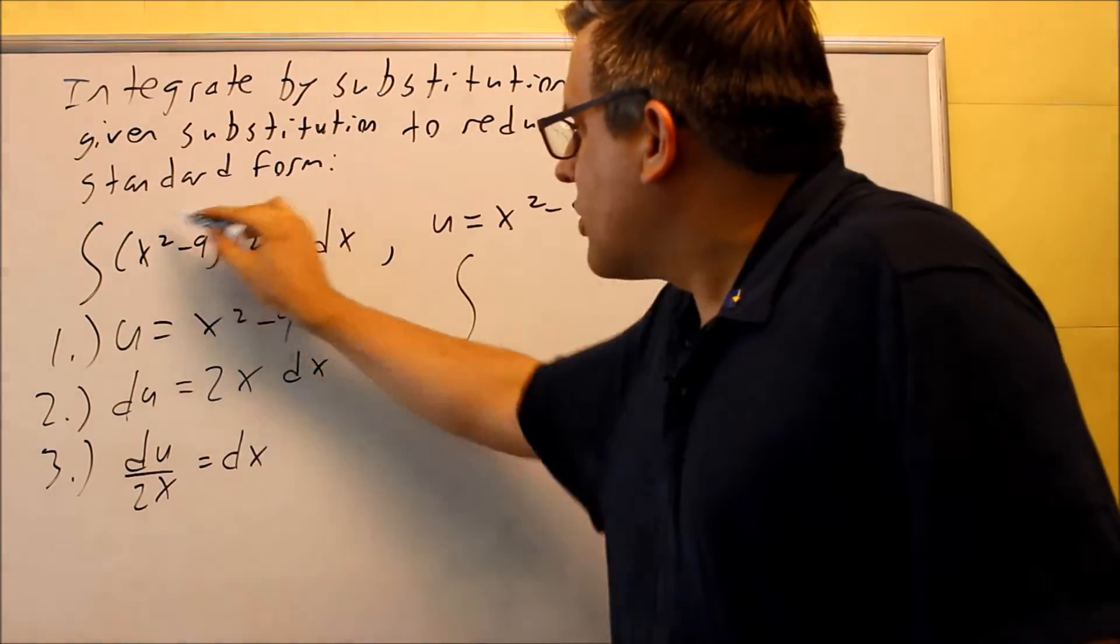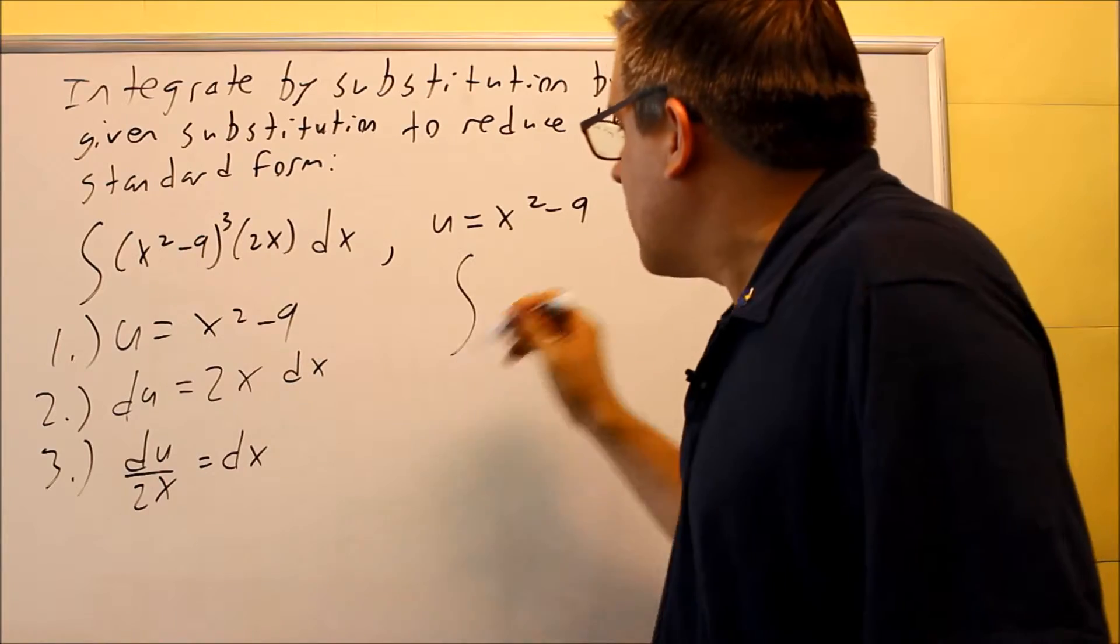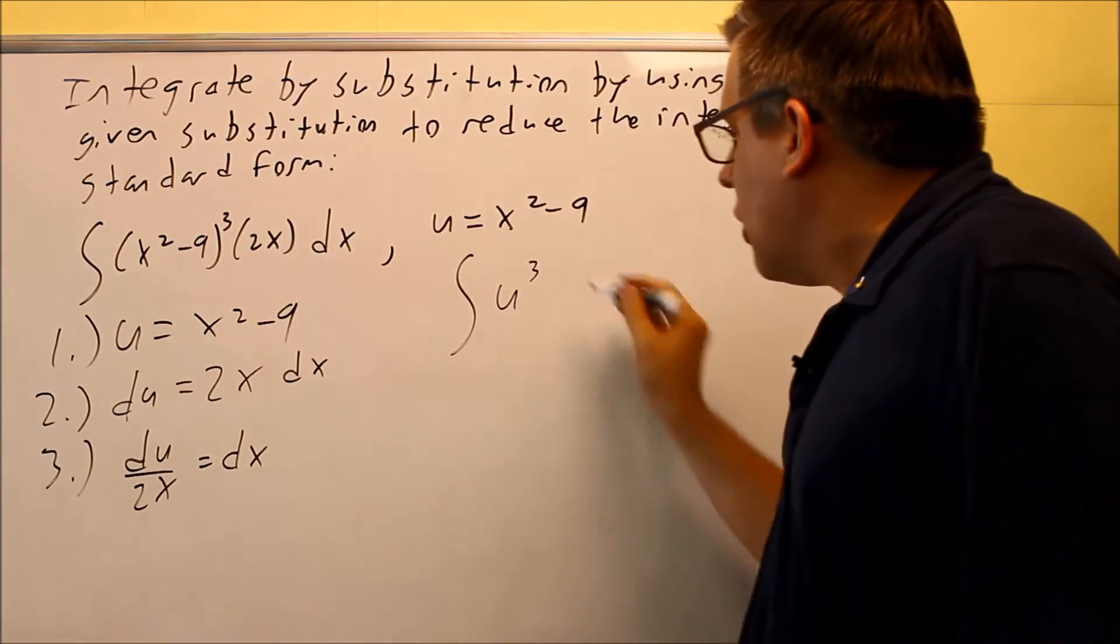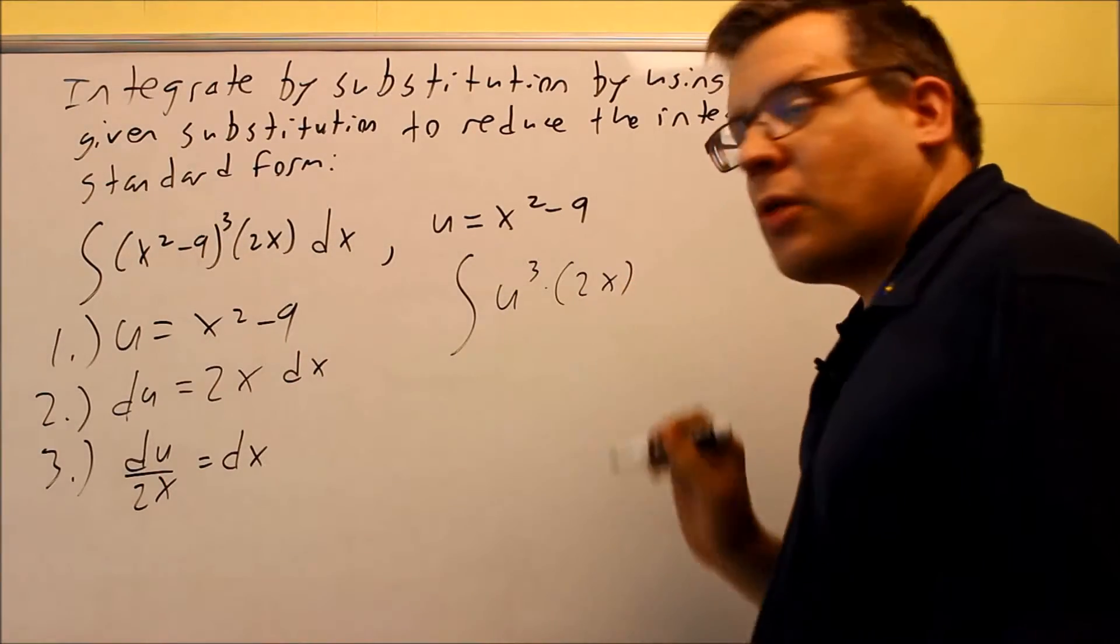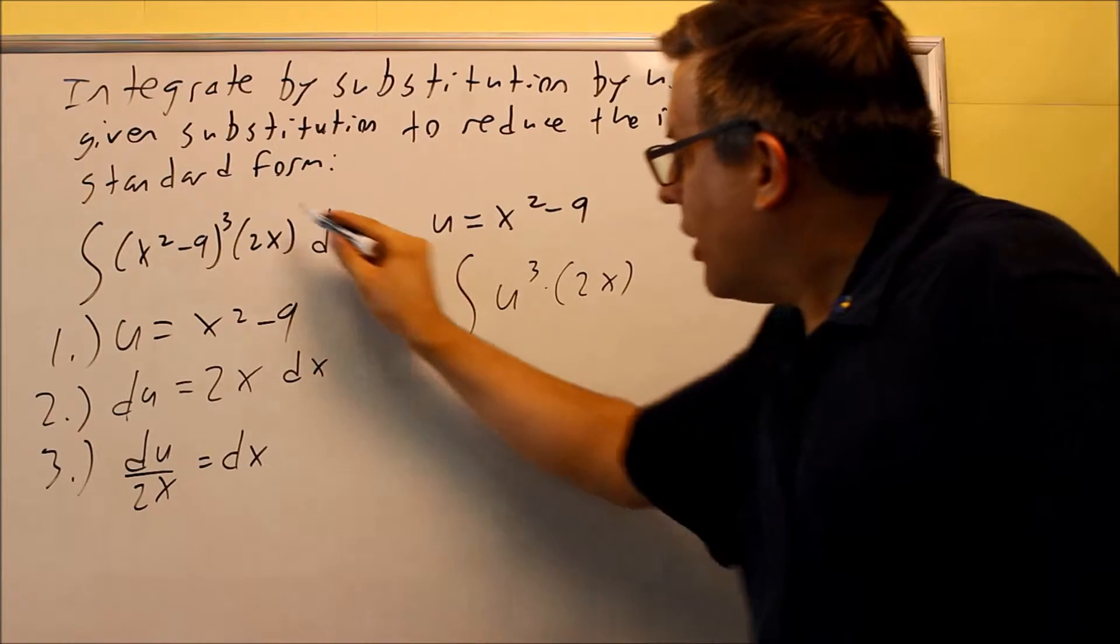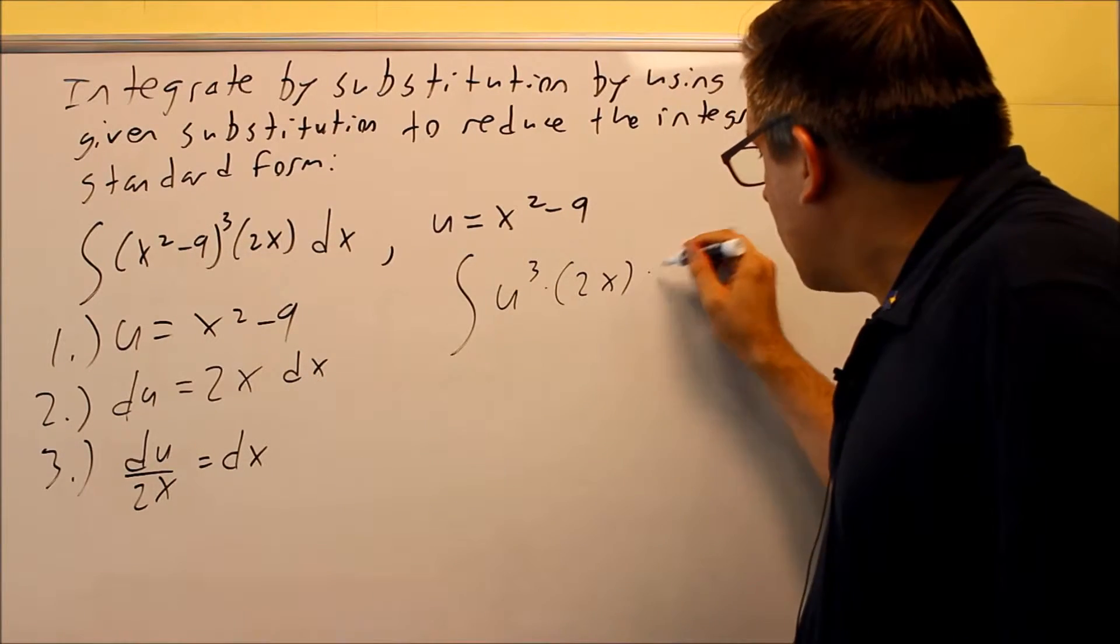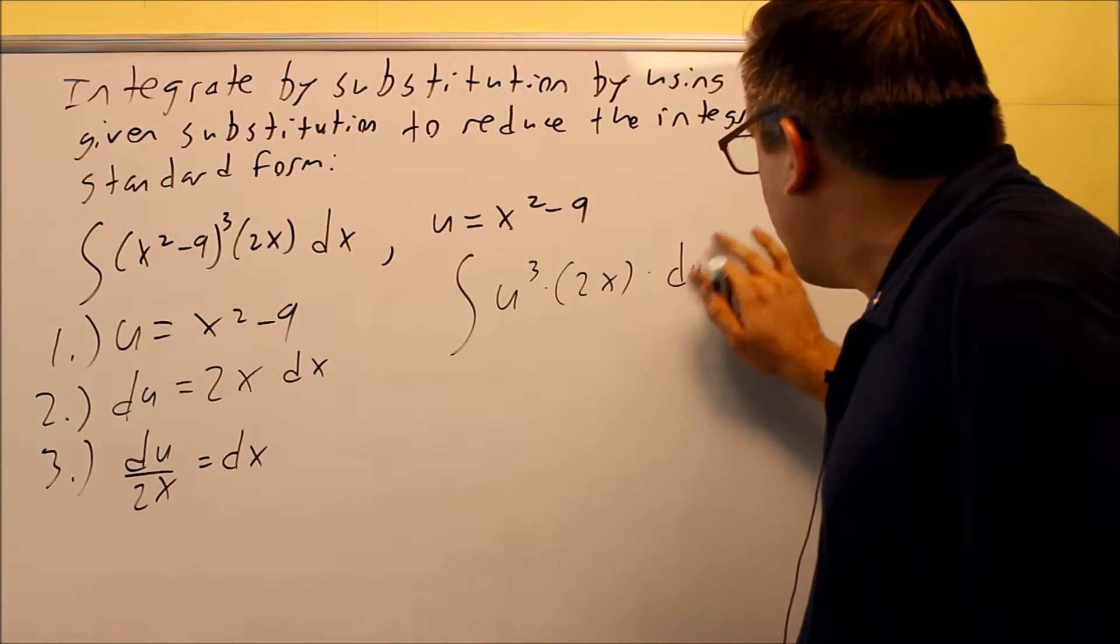And then still in step 3 we want to take this and substitute it into the original one. And so we're going to replace the u, the x squared minus 9, with u. Then we have a 2x here that's still part of that integral. And then we have a dx on the end which is du over 2x.